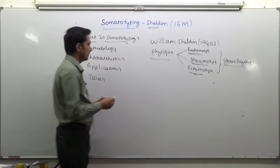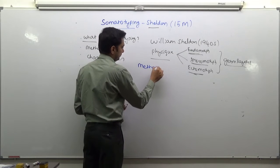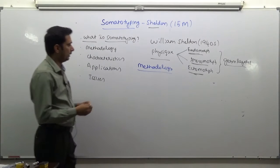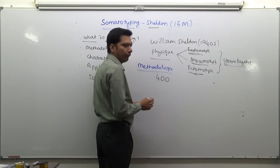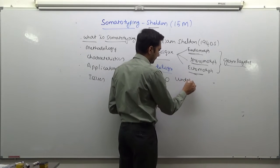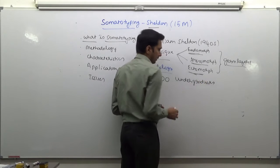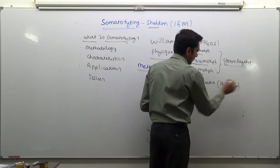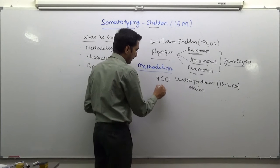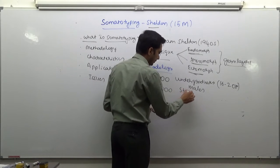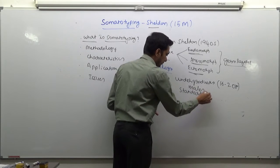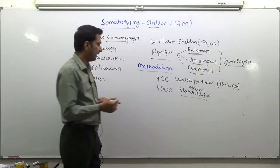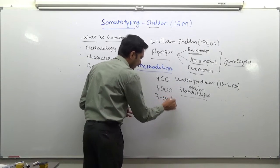What methodology is used to describe this? Sheldon took photographs of 4000 undergraduate students, all males in the age of 16 to 20 years. He took about 4000 pictures using a standardized method to nullify any discrepancies during picture taking. From this, he looked into multiple measurements and came up with a three-scale system.